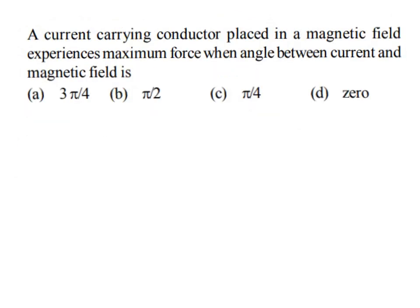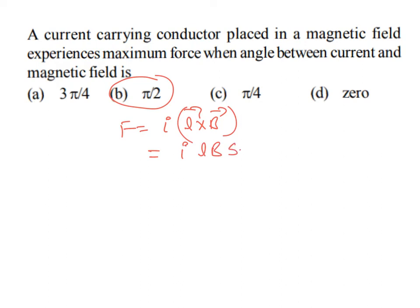Next problem: a current-carrying conductor placed in a magnetic field experiences maximum force when the angle between them is π/2. Since F = IL×B = ILB sin θ, sin θ is maximum when θ = π/2. Option B is the right answer.